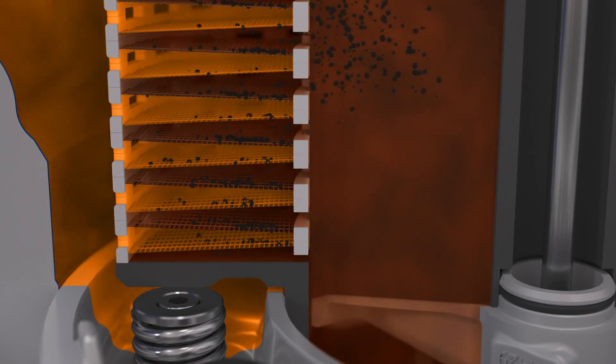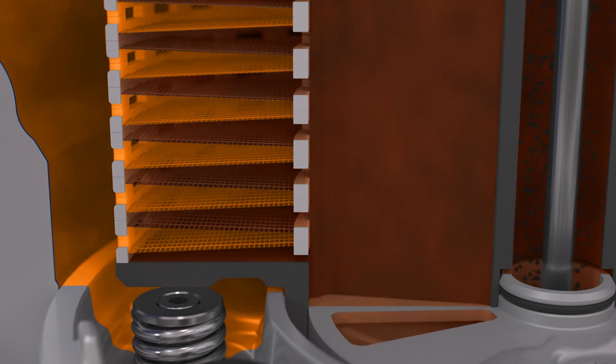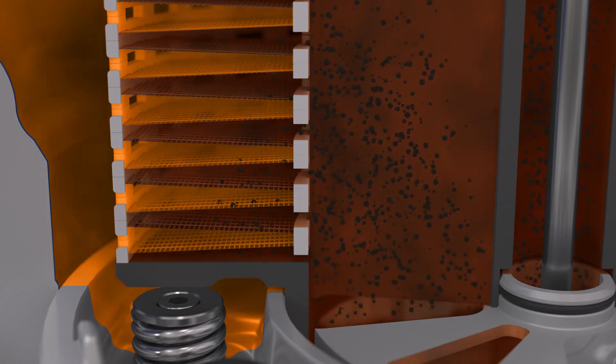The filtration capacity is always maintained thanks to continuous back flushing, which ensures no solids are retained on the surface of the filter mesh. This is done at the same time as the oil is being filtered and pumped to the engine, leading to a constant and very low pressure drop across the filter.